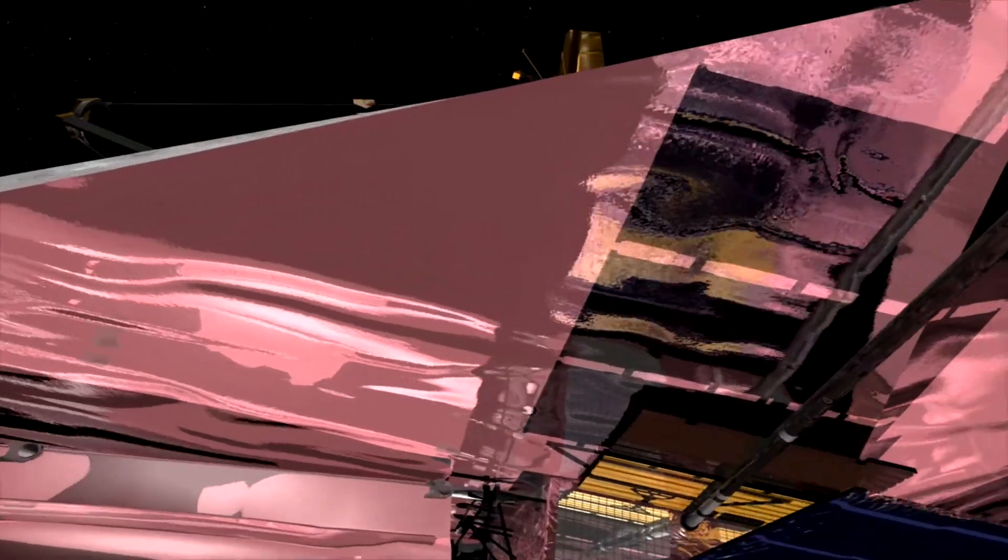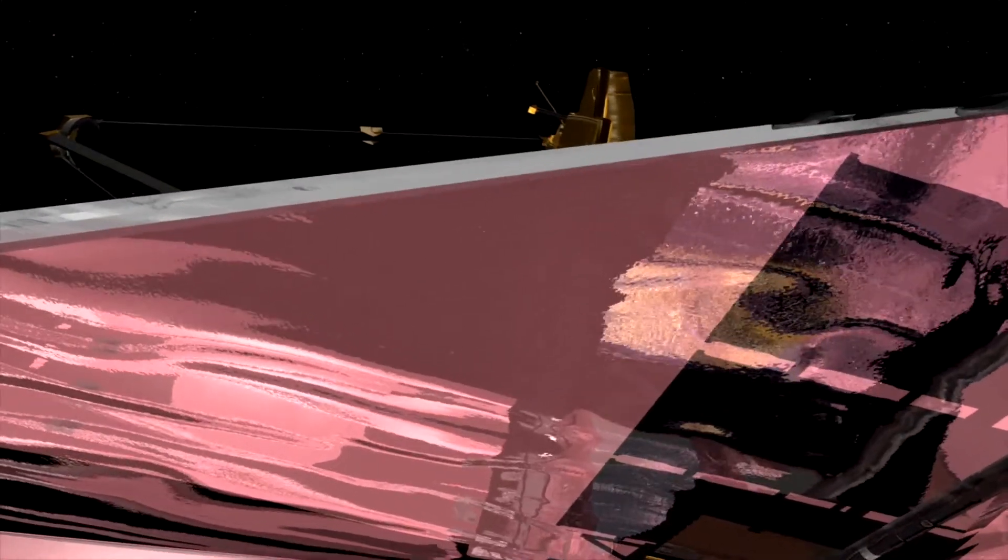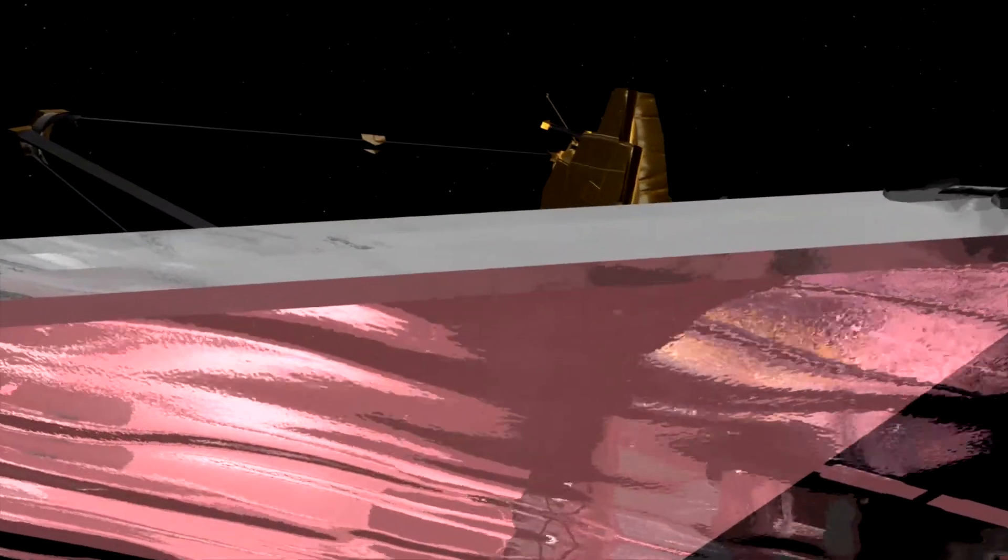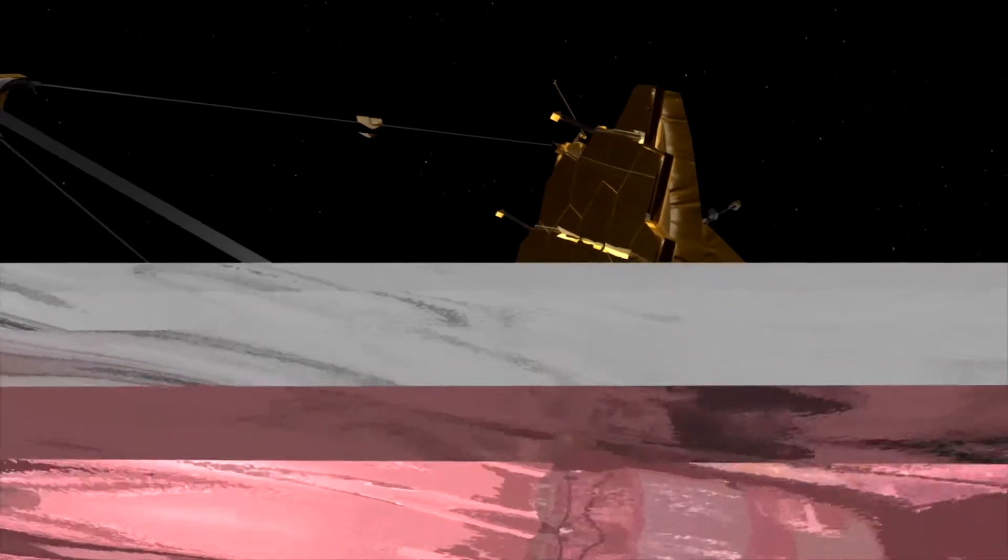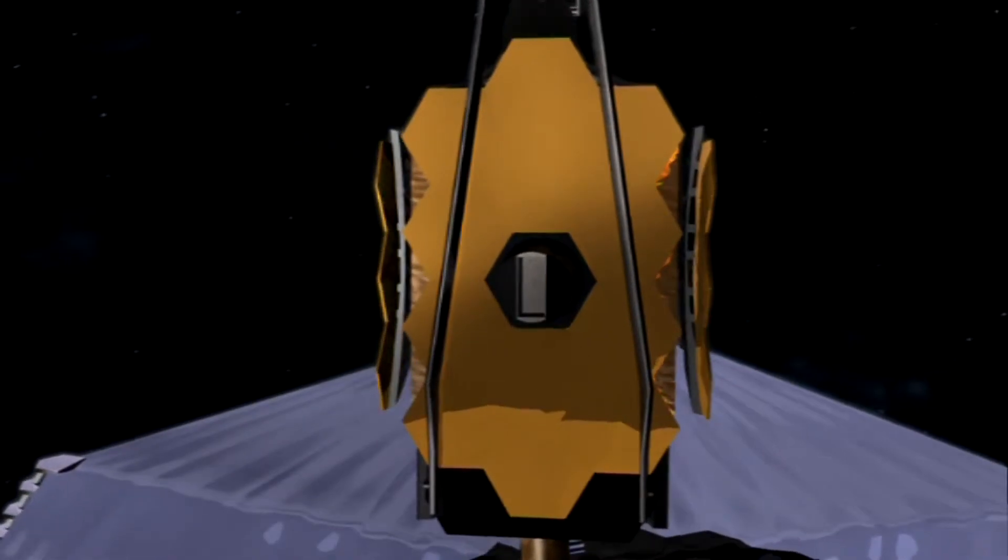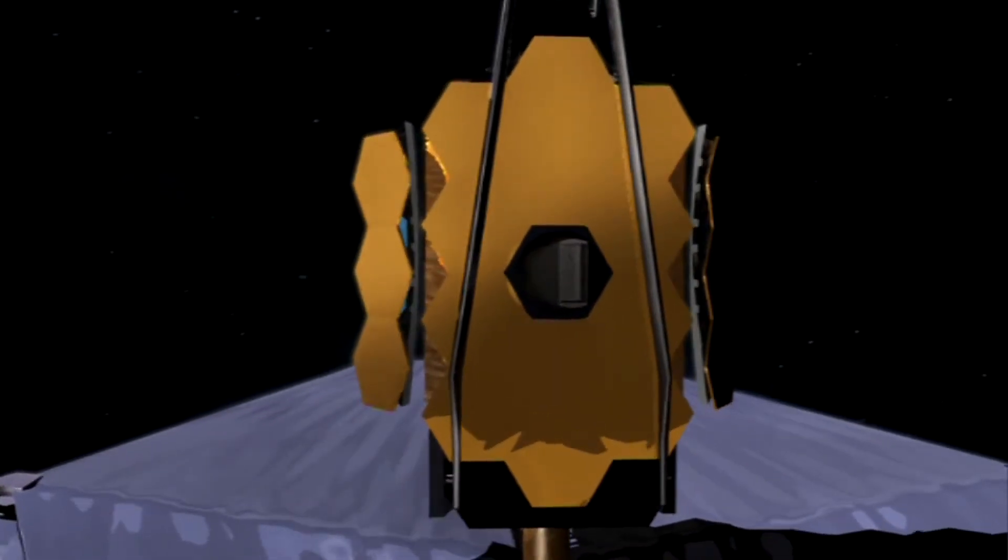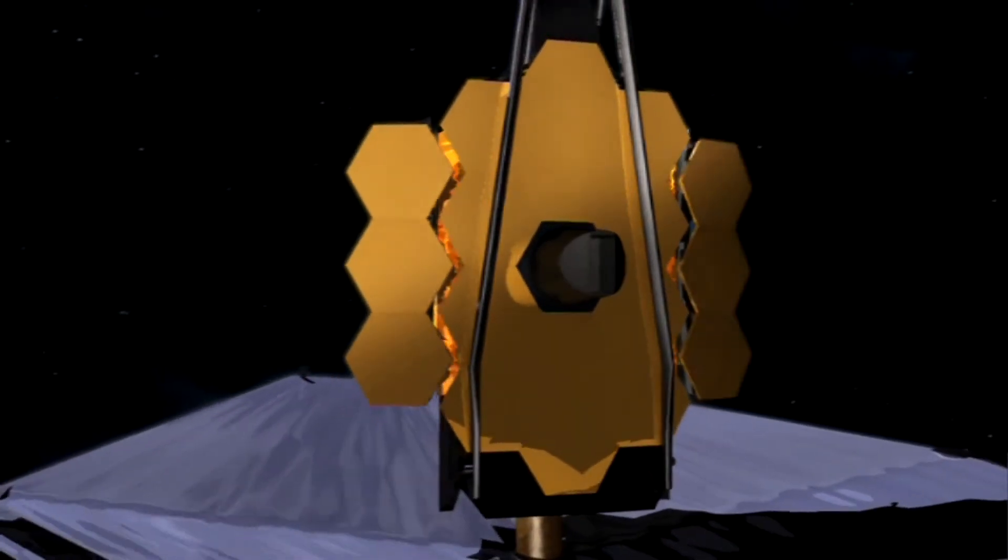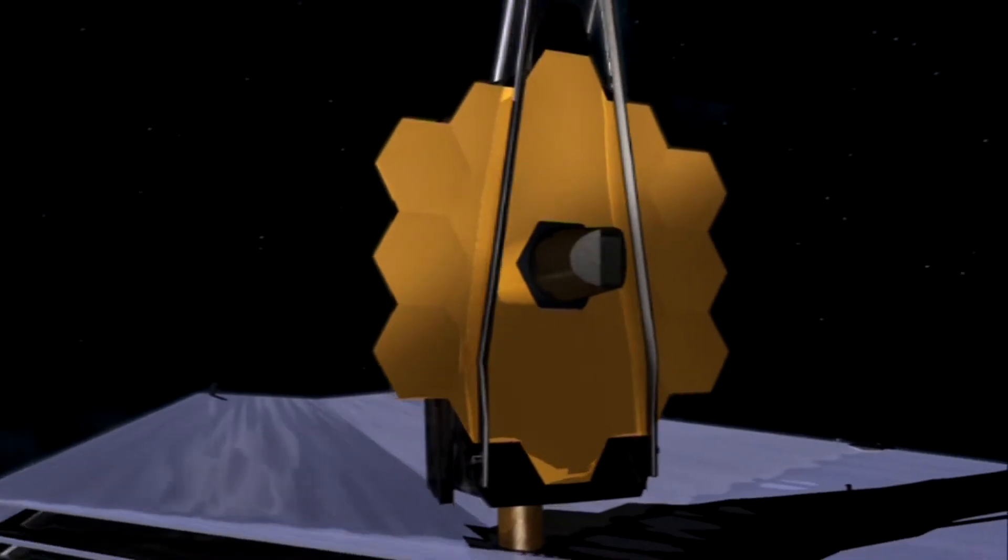Meet the James Webb Space Telescope, a space infrared observatory named after a former NASA administrator. Once in space, its 6.5 meter segmented mirror unfolds like a blooming flower, one seven times as sensitive as Hubble's.